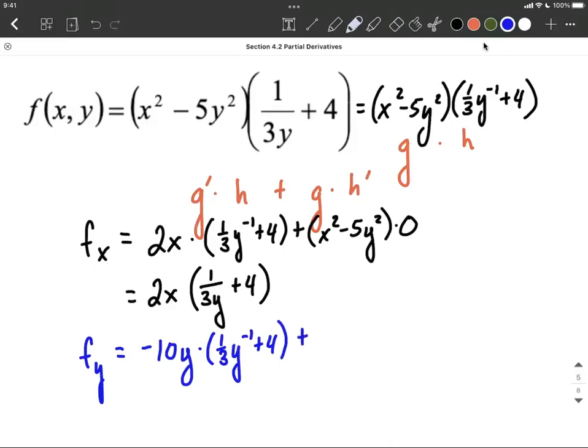Plus, we copy down g, x squared minus 5y squared, and multiply it by the derivative of h with respect to y. So this is where it's really handy to have that written with a negative exponent. We can use the power rule, move the exponent down in front, multiply it by the 1 third, so we get negative 1 third. Reduce the exponent by 1, so negative 1 minus 1 makes negative 2. And then the derivative of the 4 is going to be 0.